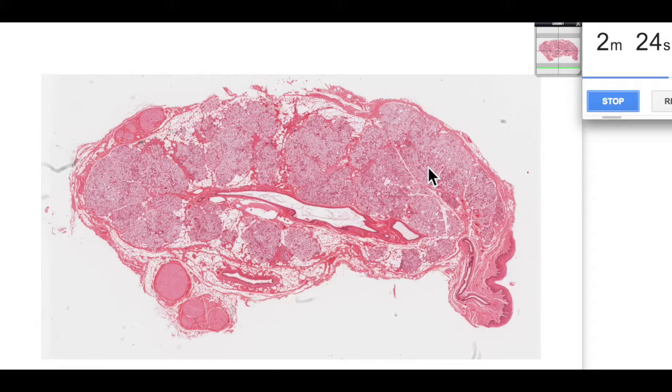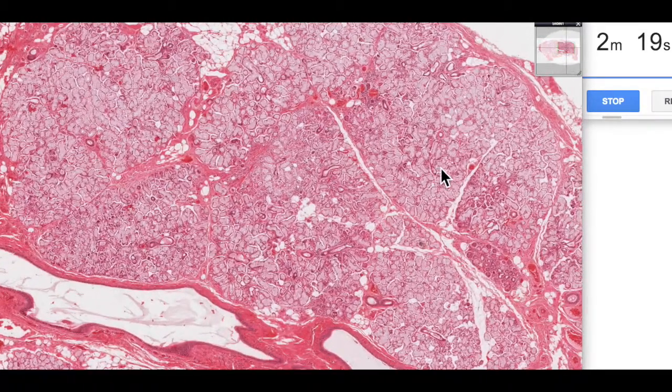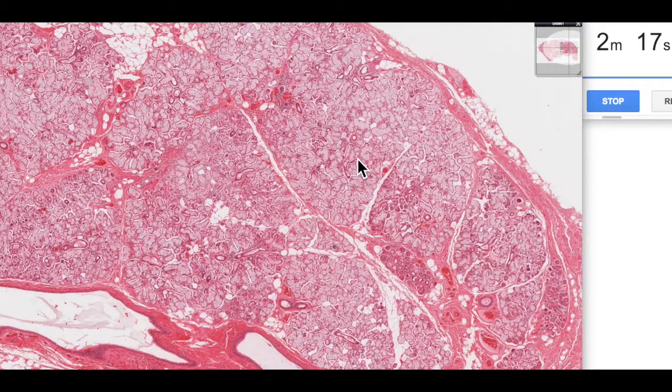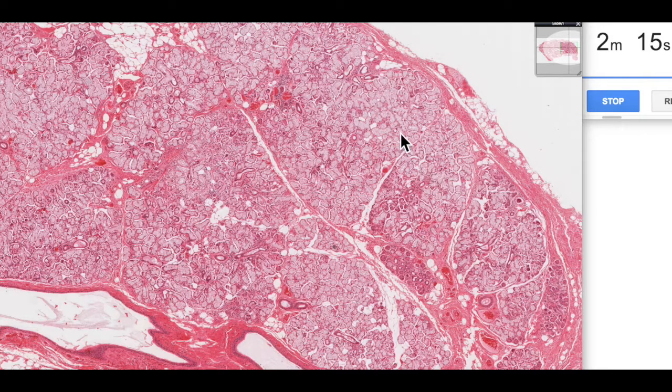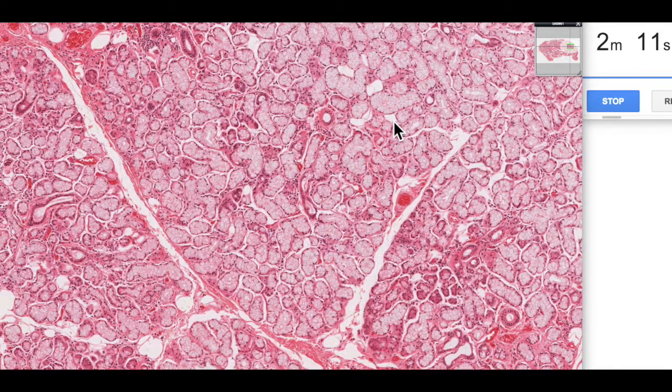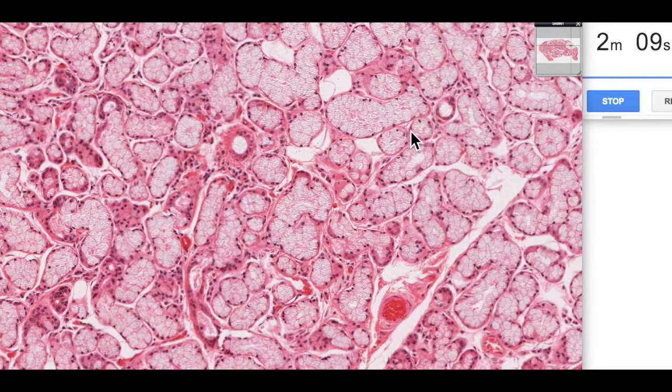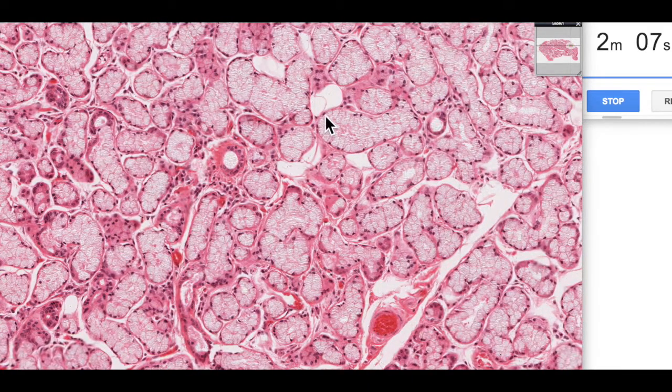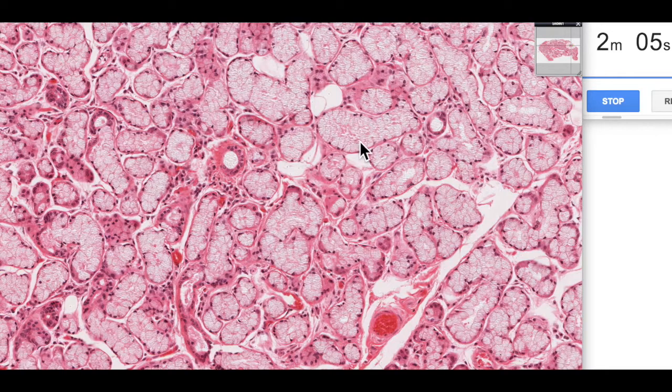Now the sublingual salivary gland is predominantly mucus secreting. So if we have a look at a little bit higher magnification, we can see all of these mucus acini, very pale staining.